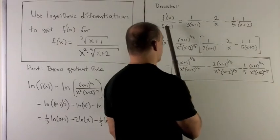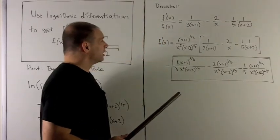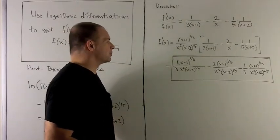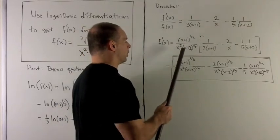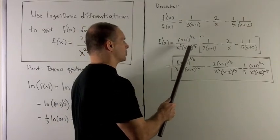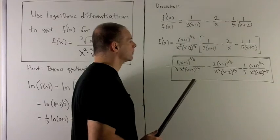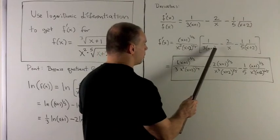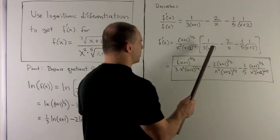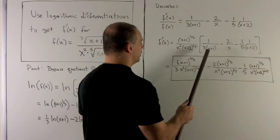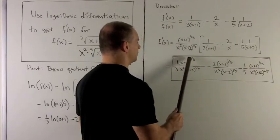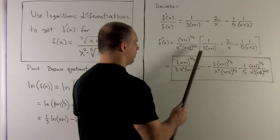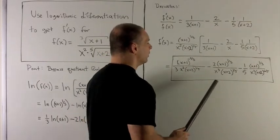And that's f prime over f. If I want to get f prime by itself, we just multiply through by f, and we know what that is by definition. That's just x plus 1 to the one-third over x squared times x plus 2 to the one-fifth. So we multiply that through, what happens? We have x plus 1 in the bottom here, so that's going to come up as x plus 1 to the minus 1, which will turn this into x plus 1 to the minus two-thirds.